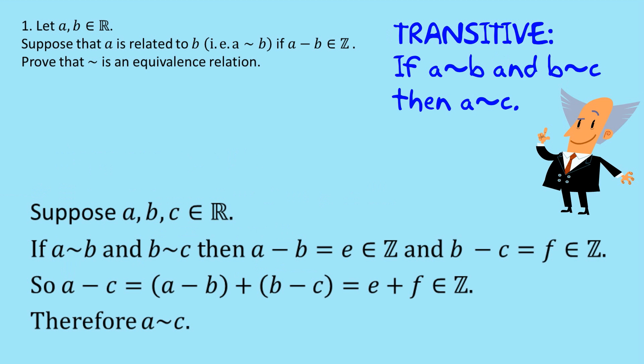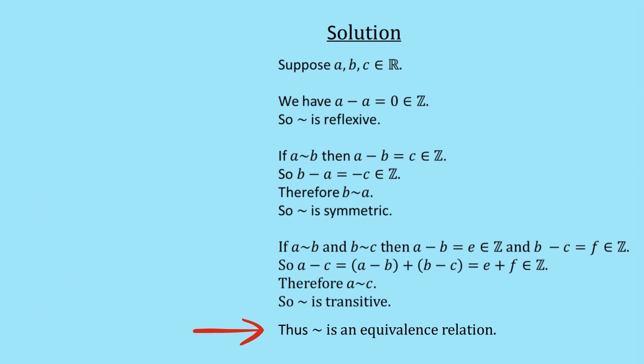Suppose a, b, c are elements of r. If a is related to b and b is related to c, then a minus b equals e, which is an integer, and b minus c equals f, which is an element of z. So a minus c is equal to a minus b plus b minus c, which is equal to e plus f, which also must be an element of z. It must be an integer. And so therefore, a is related to c. And then we just finish up by saying, thus, the relation is an equivalence relation.